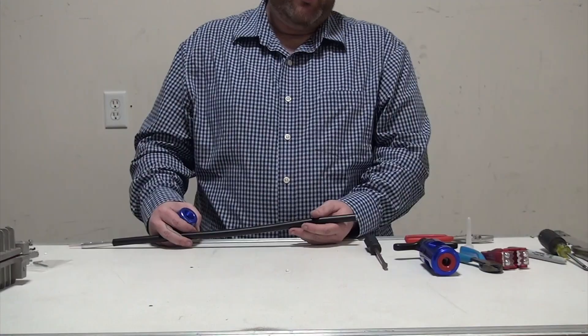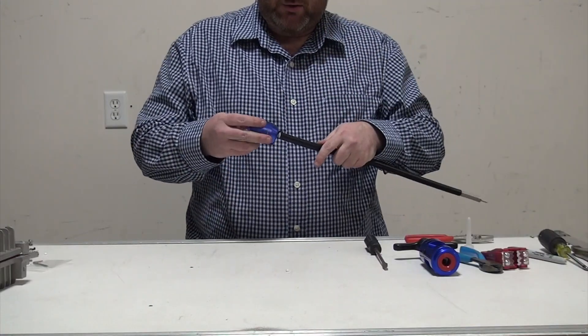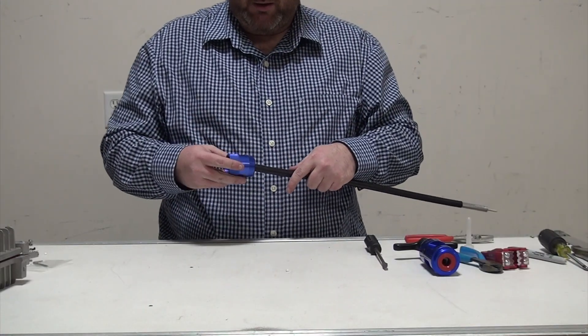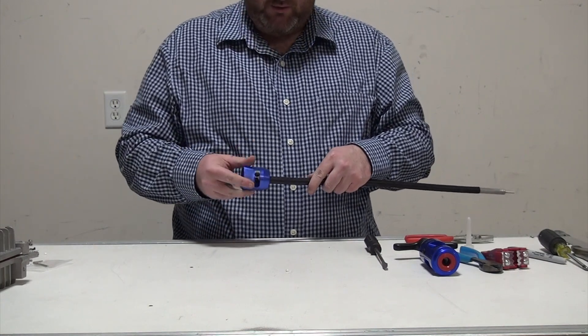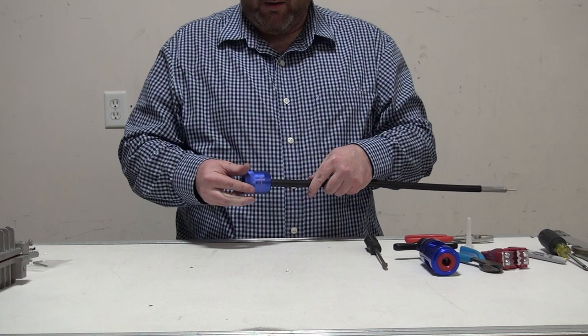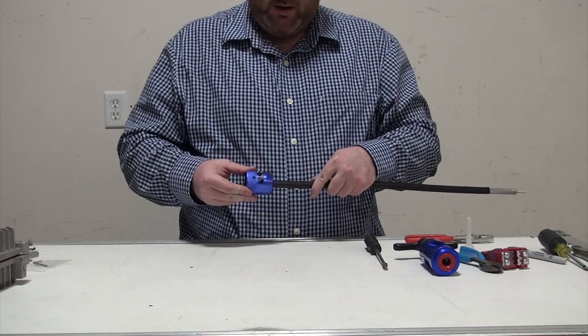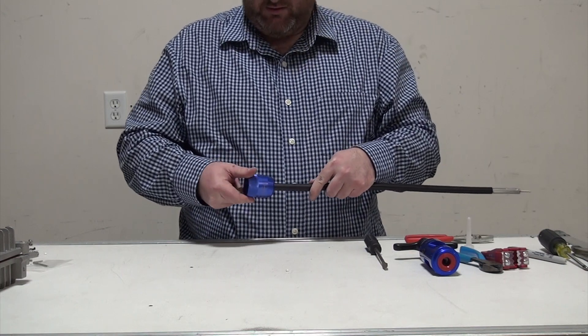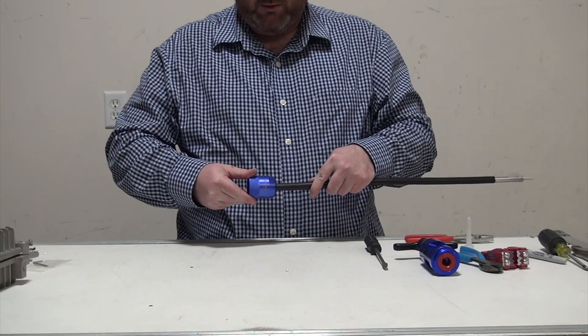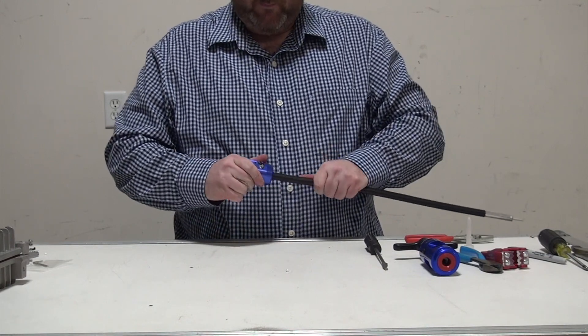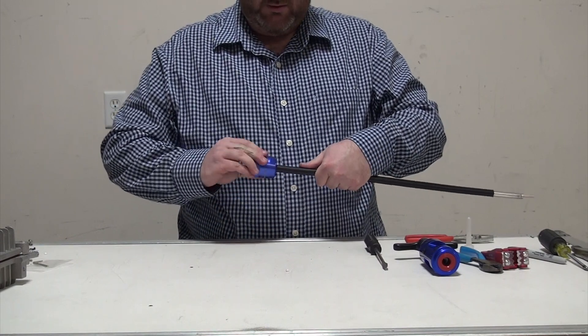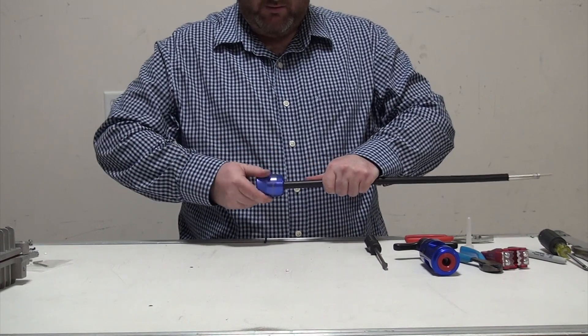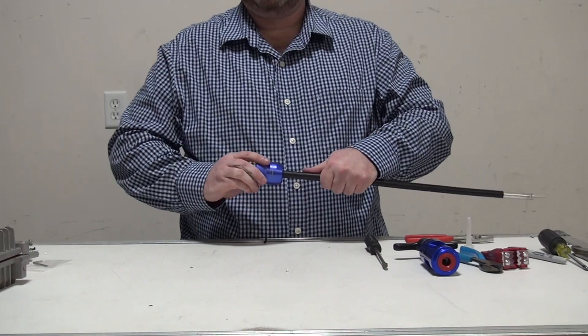Now we're ready to prep our cable. We're going to strip and prepare our hardline cable. We're going to take the jacket stripper, insert it over the edge of the hardline cable, and gently twist until we feel it catch on the jacket. Once it catches, just continue to turn it and strip the cable back.